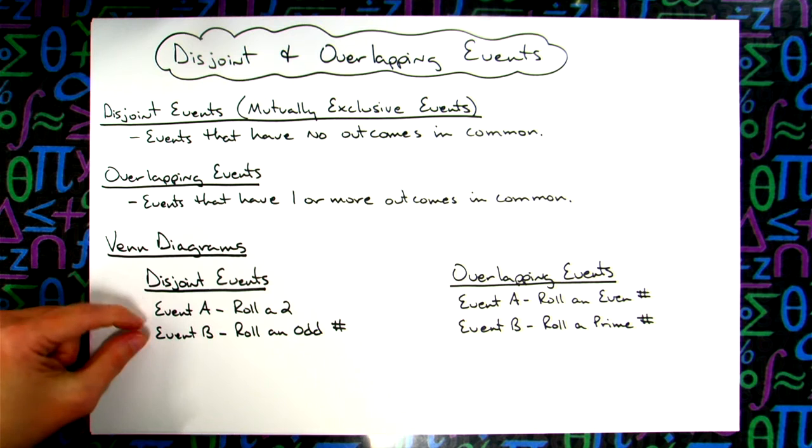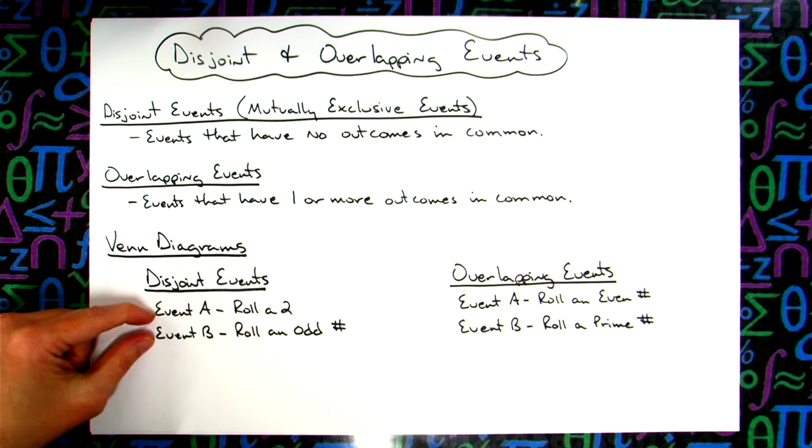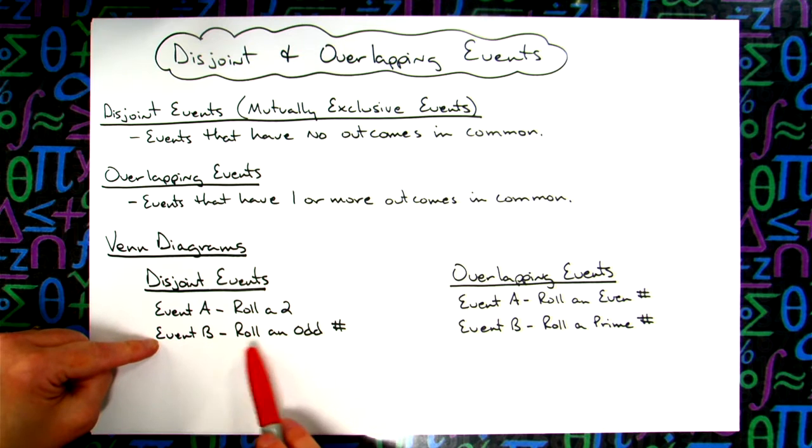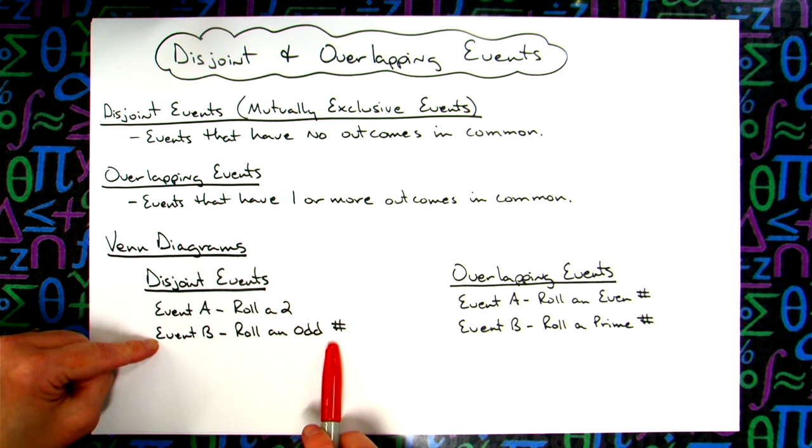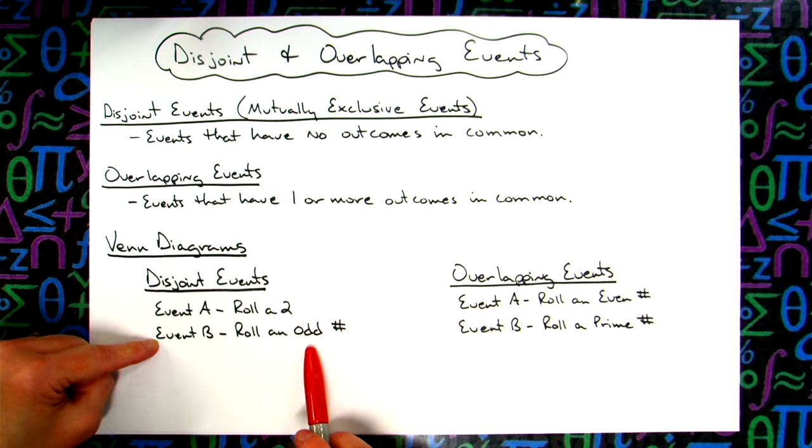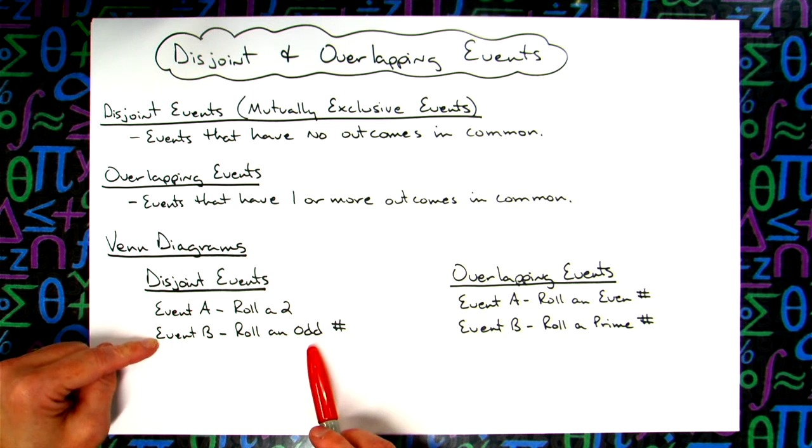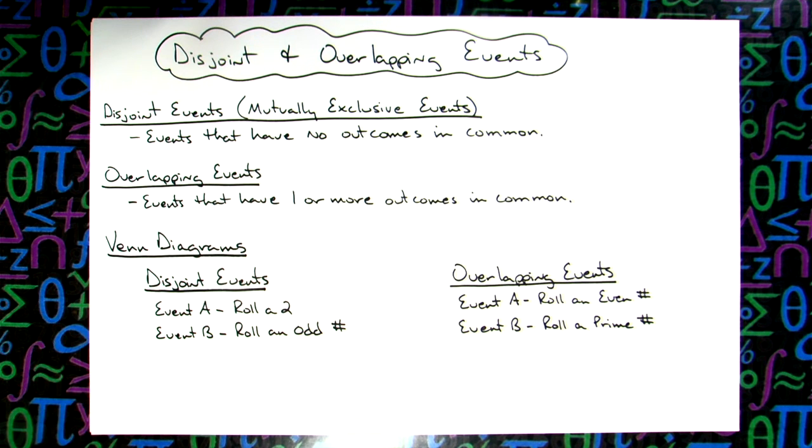If I've got two events, if my first event is rolling a two on a dice, my second event is rolling an odd number. These are disjoint events because there are no outcomes that they have in common. Two is not an odd number, so there's nothing in common there.